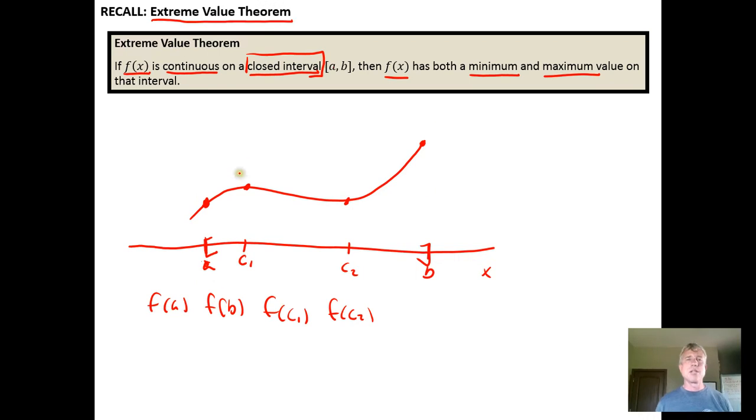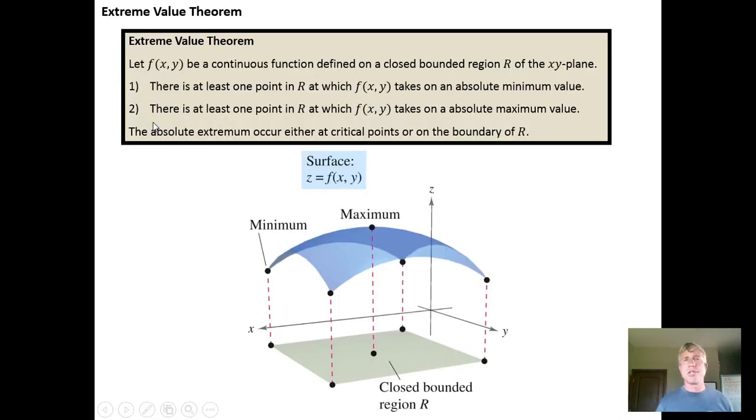And then the idea was that the smallest or largest values could occur at the critical numbers. But because we have a bounded curve, the high point on the curve or the low point on the curve could occur at the interval boundary. So what's going to change with the function of two variables then - because our domain doesn't live on the x-axis, it lives in the xy plane - instead of having a closed interval, we're going to create a closed bounded region.